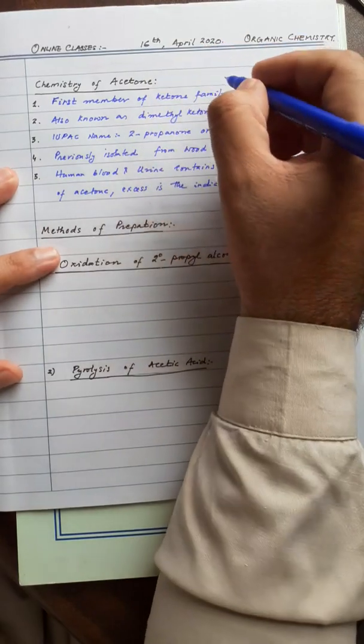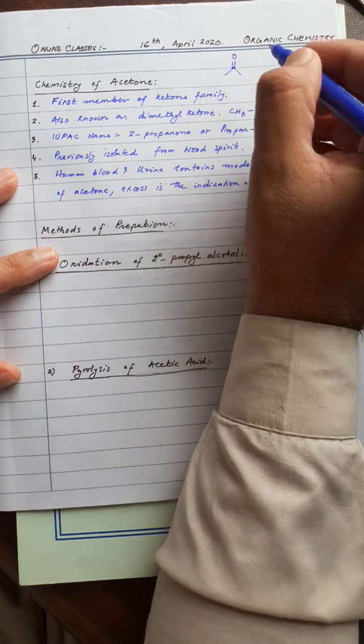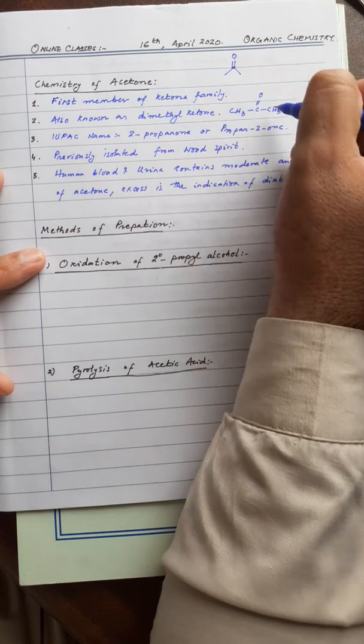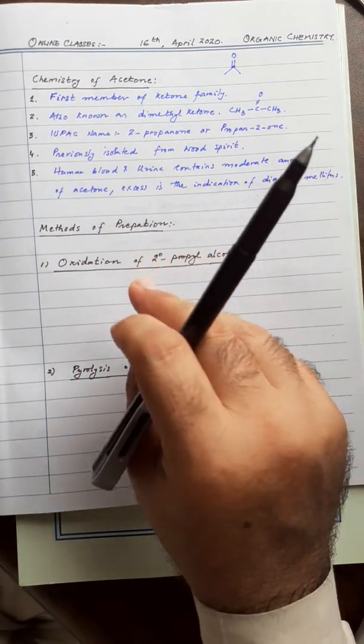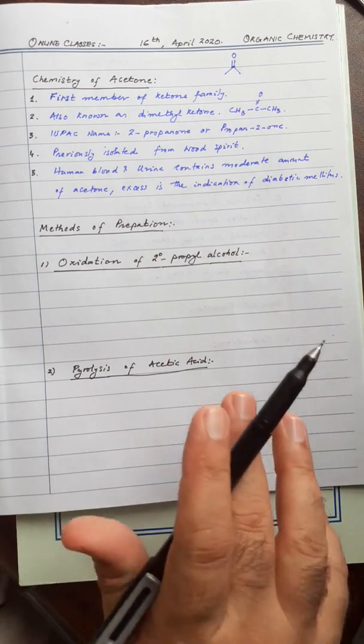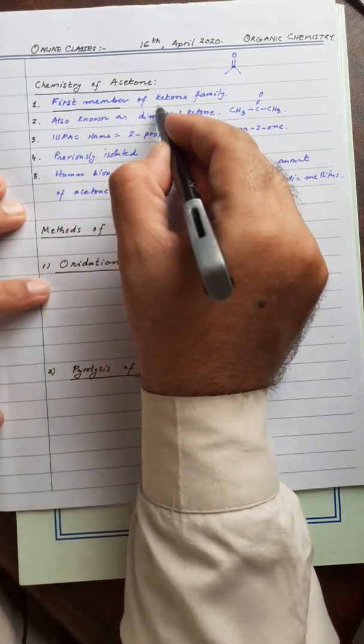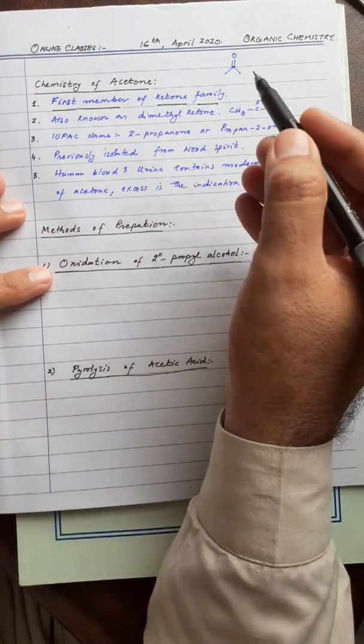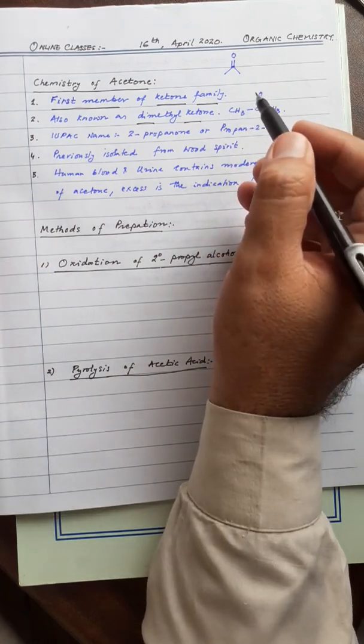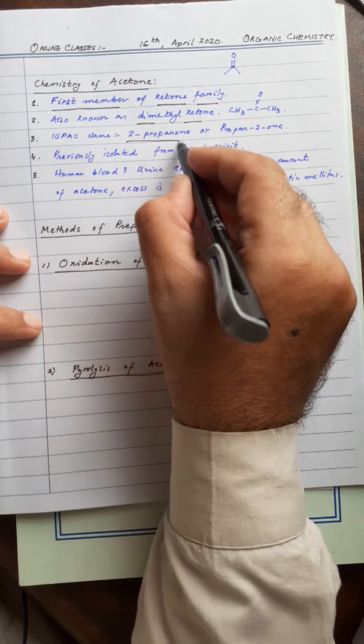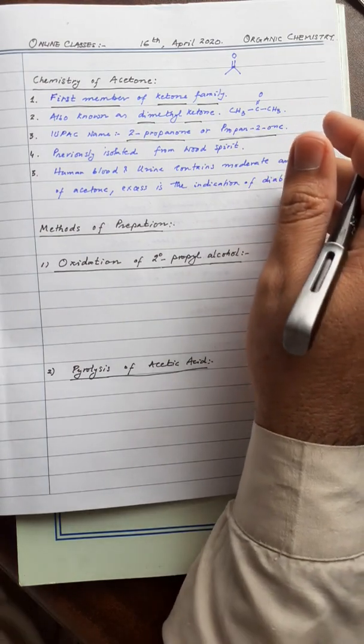Today's lecture is about chemistry of acetone. I just pre-wrote all this so that my lecture is to the point and I'm not wasting your time. Acetone is the first member of the ketone family. It is the first ketone, propanone. The common name is dimethyl ketone - two methyl groups bonded to a ketone carbonyl group. IUPAC calls it 2-propanone or propan-2-one.